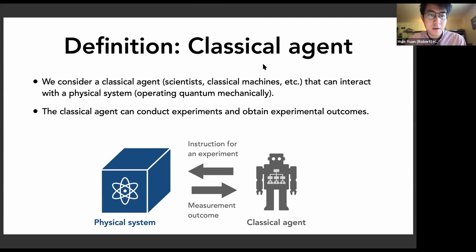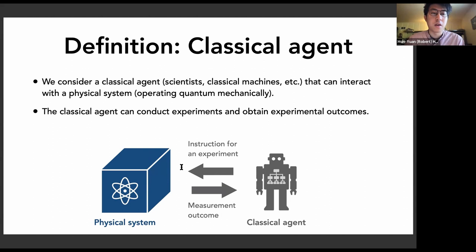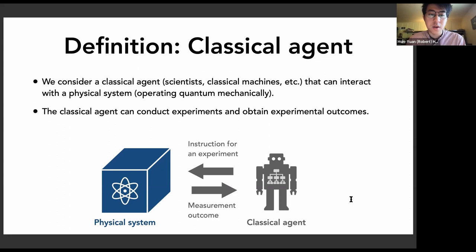The first thing we're going to define is what we call a classical agent — an abstract model for scientists, classical computers, or classical machine learning models. A classical agent can interact with a physical system operating quantum mechanically, such as a quantum computer, quantum sensor, or some physical material. The agent can conduct experiments and obtain experimental outcomes: specifying an instruction and obtaining a measurement outcome, forming an interactive protocol to learn about the quantum system.